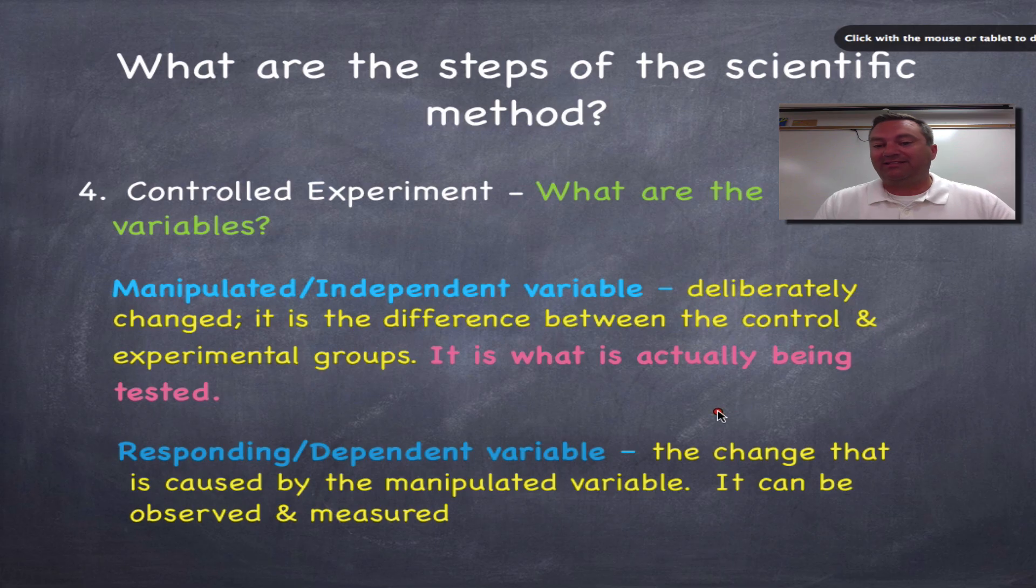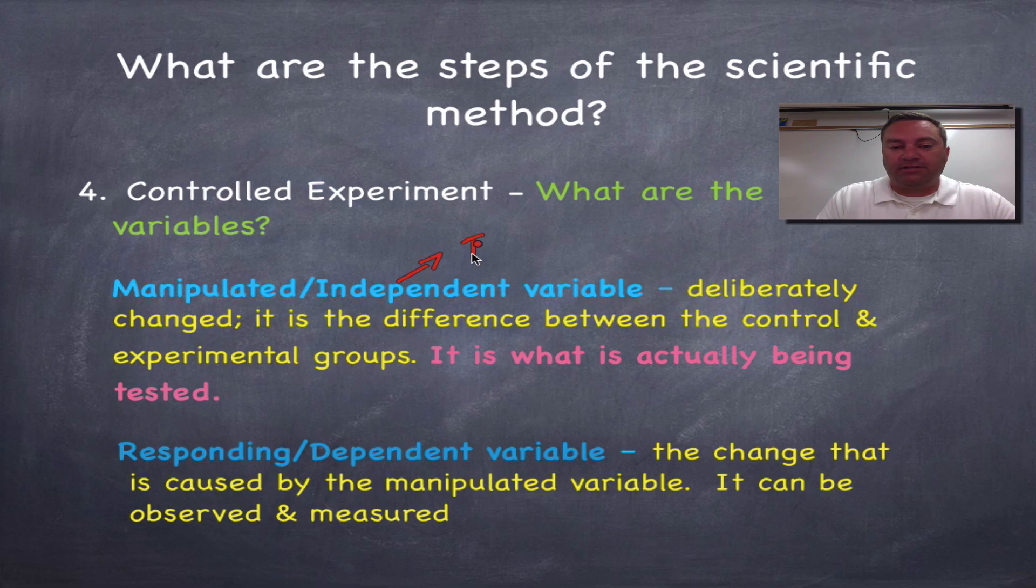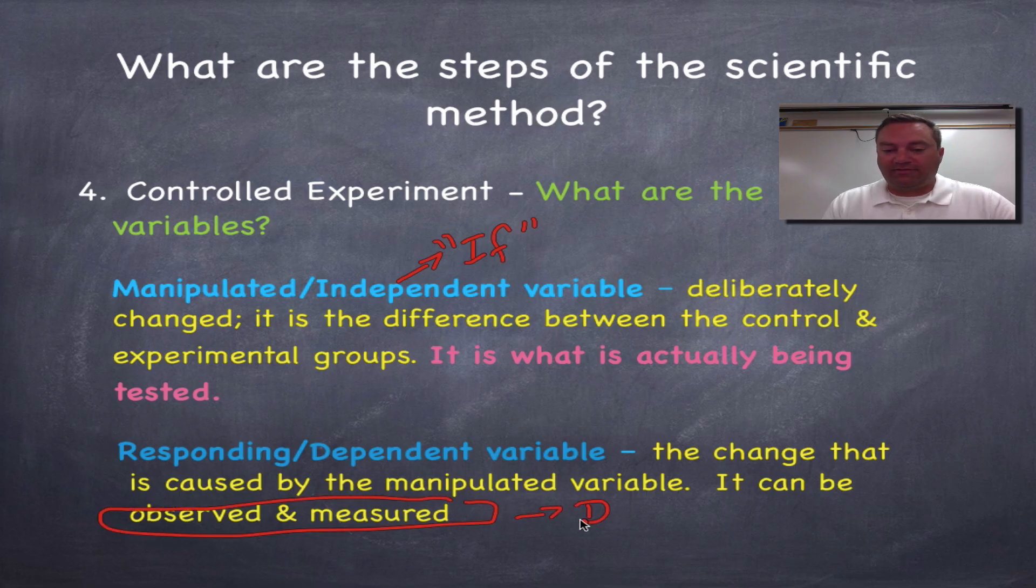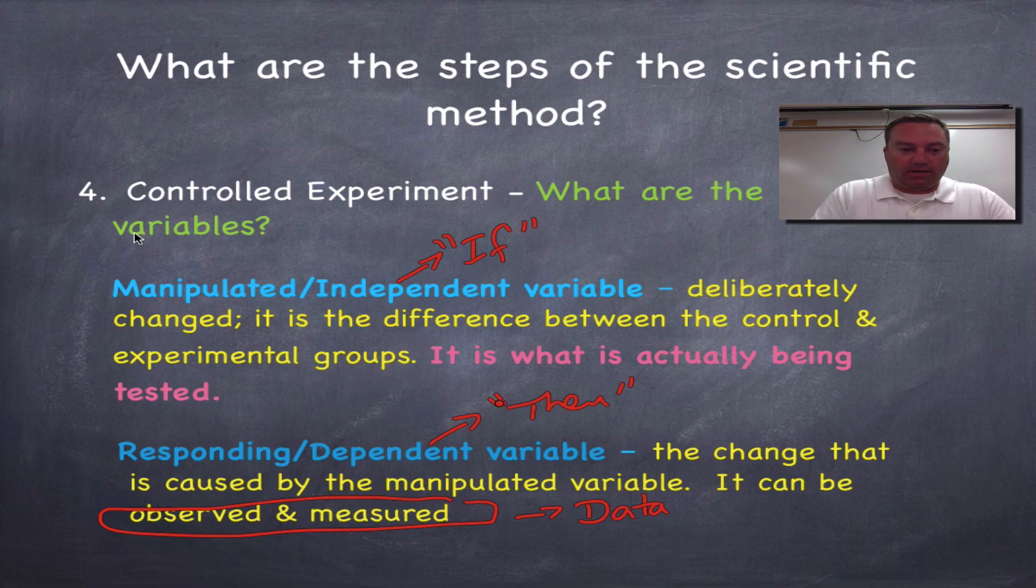The independent variable, remember, it's deliberately changed. It's the difference between the control group and the experimental group. And you want to remember, this is the if part in your hypothesis. The responding variable is the change that was caused by it. So this can be observed and measured. So when you see the word observed and measured, I want you to think of data. So remember, the dependent variable, this is the then part of your hypothesis. Lots of colors on here. This should be a note to you that when you see a bunch of colors, that means it's important. Just to give you a little bit of a hint, you might want to know what these two words mean on your test or your quizzes. You better know this stuff.